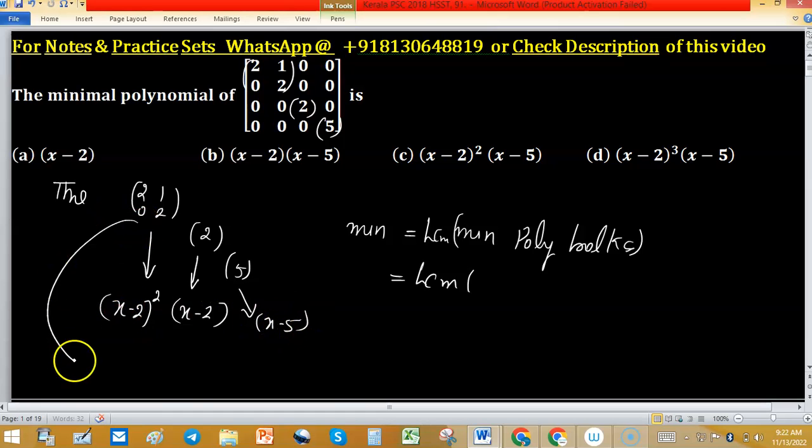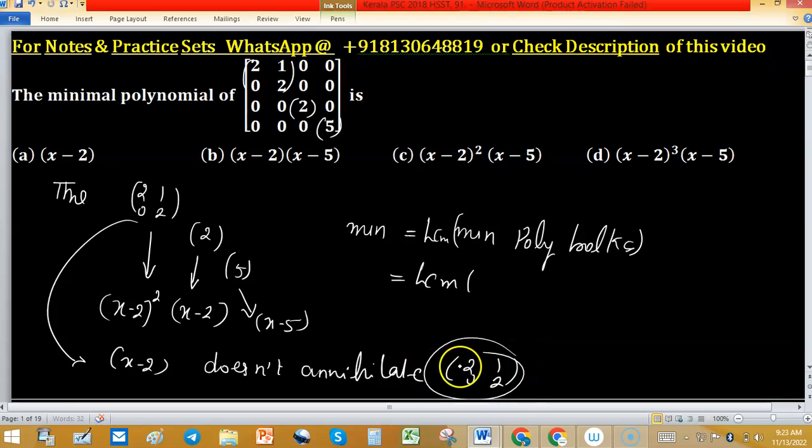The minimal polynomial of the first block could not be x minus 2 because x minus 2 doesn't annihilate this block. If we put this first block [2, 0, 1, 2] into the polynomial x minus 2...